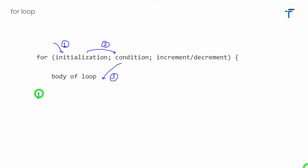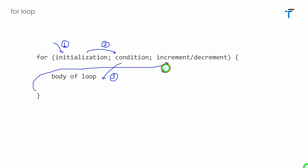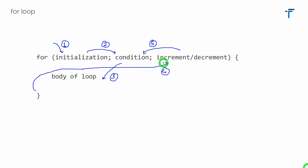If your condition is true — that is step number three — it will directly execute the body of the loop. After executing the body of the loop, it will never go downward. Instead, it will go up for increment or decrement, which is step number four. Then after performing increment or decrement, it will again go for checking the condition — that is step number five. And once again, if the condition is true, it will execute the body of the loop, and then again go for increment or decrement.